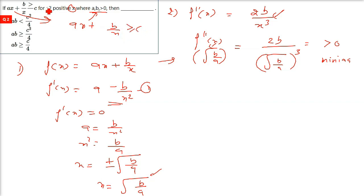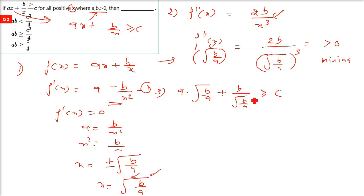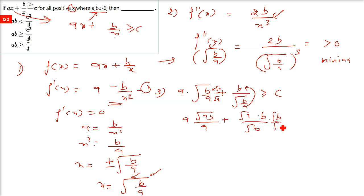Since ax plus b by x is greater than or equal to c, substitute x equals square root of b by a into the original equation: a times square root of b/a plus b divided by square root of b/a, all greater than or equal to c. Simplify by multiplying the first term by root a over root a and the second term by root b over root b — the a's and b's cancel, leaving root(ab) plus root(ab).